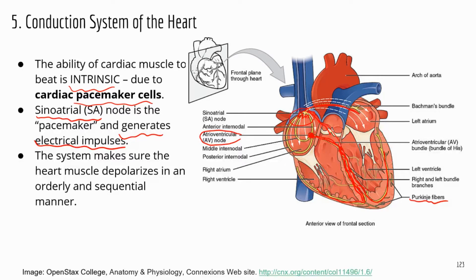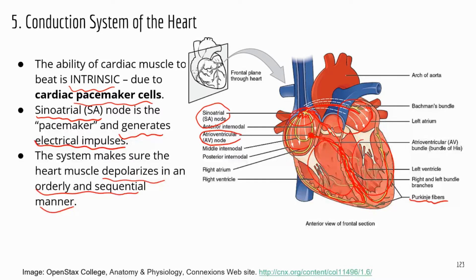As the signal travels down, the heart depolarizes and contracts in an orderly and sequential manner — starting with the two atria and then the two ventricles. You absolutely have to know the SA node, the sinoatrial node, because that's where the pacemaker cells are located. That's the node that generates the electrical impulses and defines the rhythm of the heartbeat.